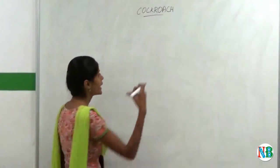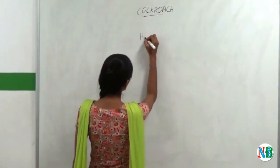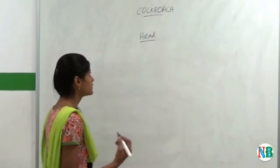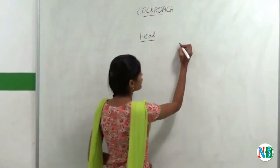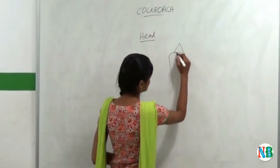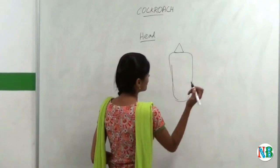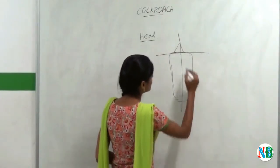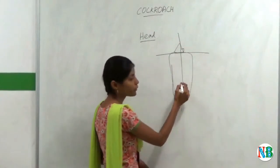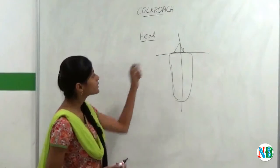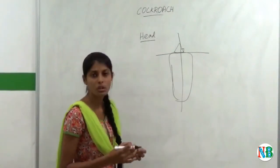Now we will see the head. As you have seen, head of the cockroach will be in triangular shape. And consider this as its body. If you draw a line like this, the head will be at right angle to the longitudinal axis of the cockroach's body. And this head is made up of fusion of six segments.